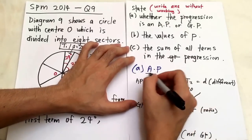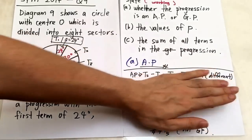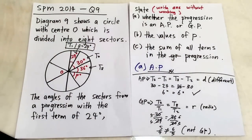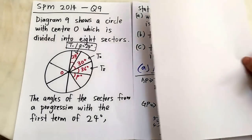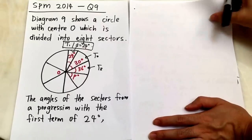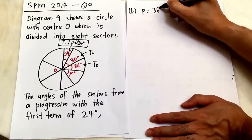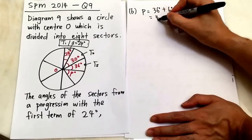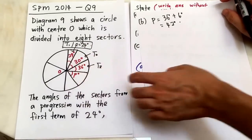In the exam, you just need to write the AP answer — that's all. The bottom part was just extra explanation. Now continuing to part B, the question asks you to find P. Since the sequence keeps adding 6, P equals 36 plus 6, which is 42.